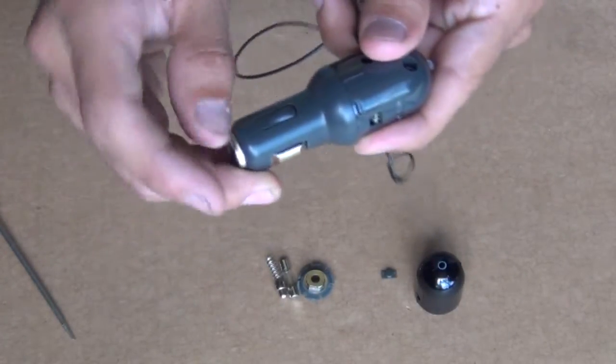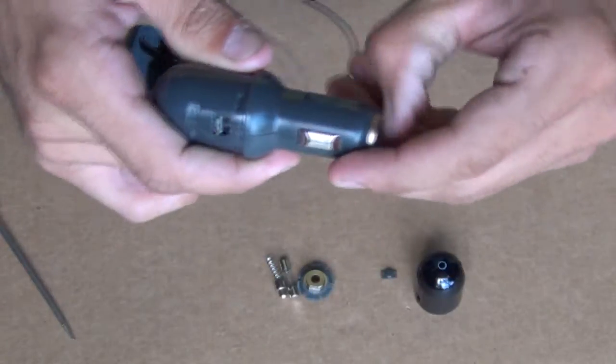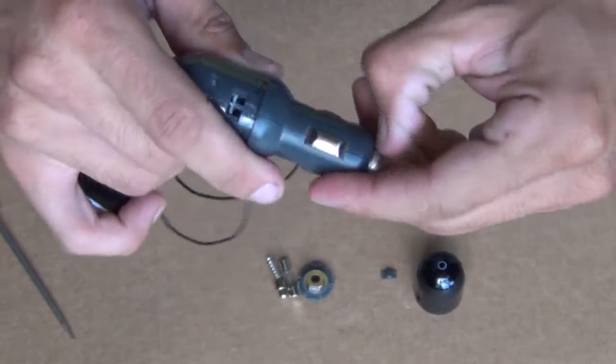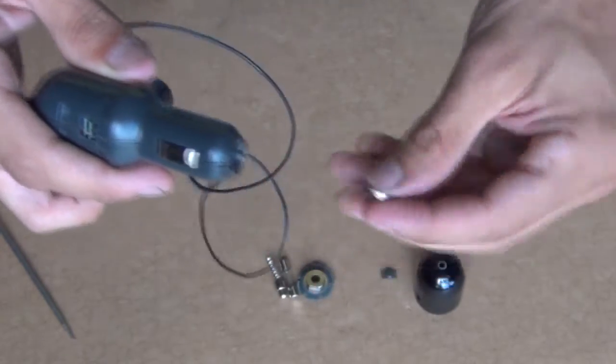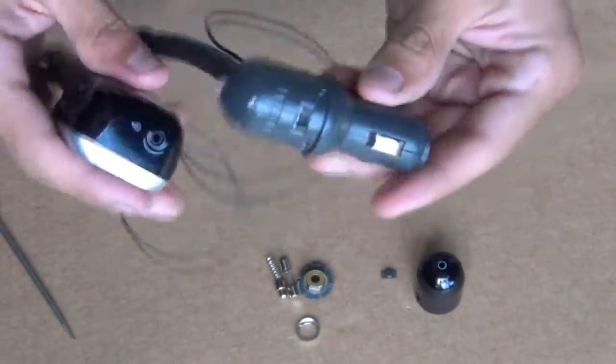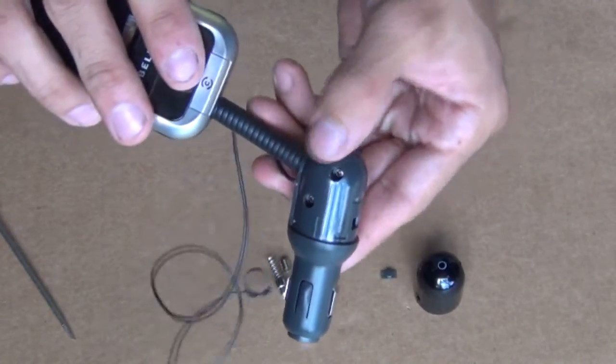Now you just want to pull this little thing off. You can use a fingernail or a flathead screwdriver and then you can get that little ring off. Okay, and then once all that's off, now it's time to remove the two Phillips screws.